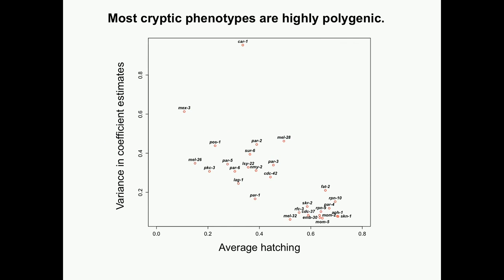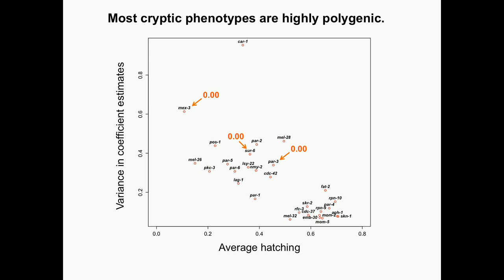Some gene perturbations revealed more cryptic variation than others. For these cryptic phenotypes, one question we had was: are there many cryptic alleles contributing of small effect, or a few of large effect? For the majority of these cryptic phenotypes — all of which revealed significant cryptic variation — the answer is mostly many alleles of small effect. We know this because we estimated genomic heritability using estimates of relatedness across the strains from about 40,000 SNP genotype data, and we got, for the most part, very high estimates of heritability. That can only be explained by high polygenicity, because that's what's best captured by relatedness. But in a few cases, we got estimates of zero, so for those phenotypes we think there are probably a few major alleles.